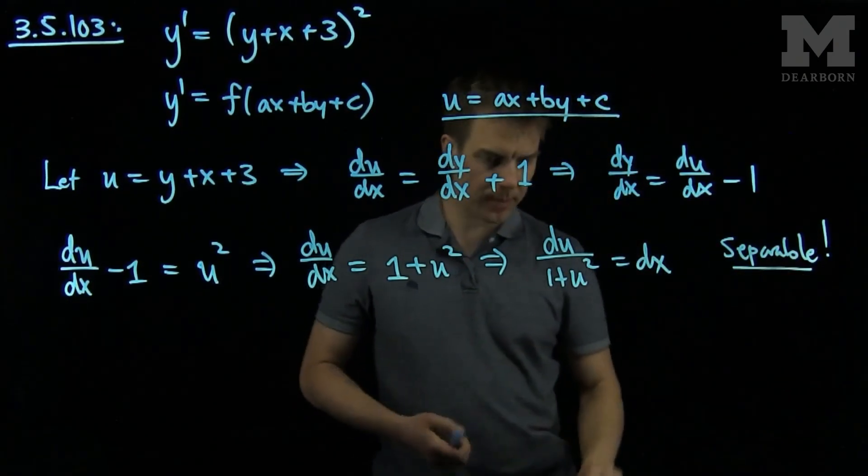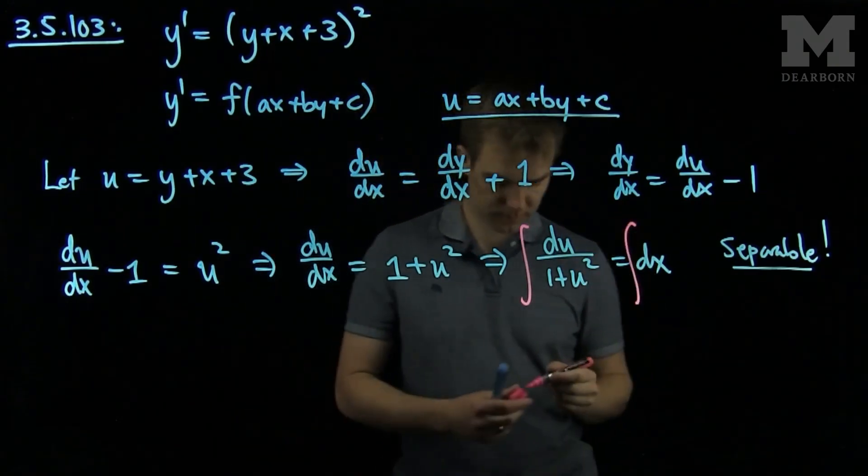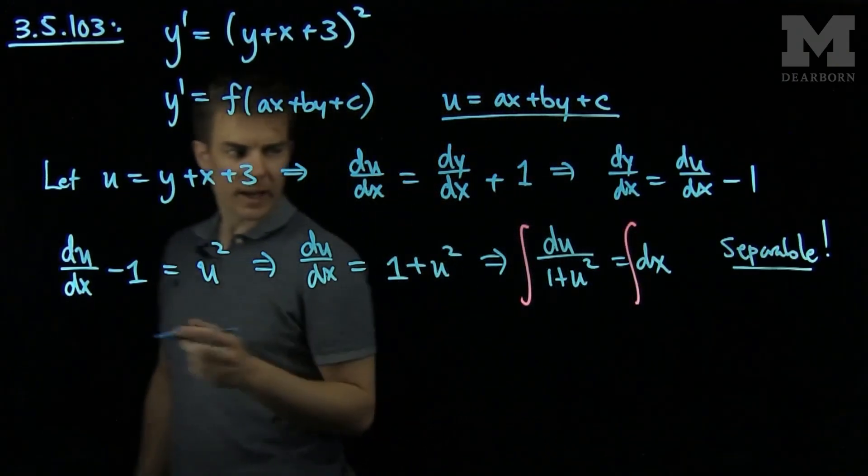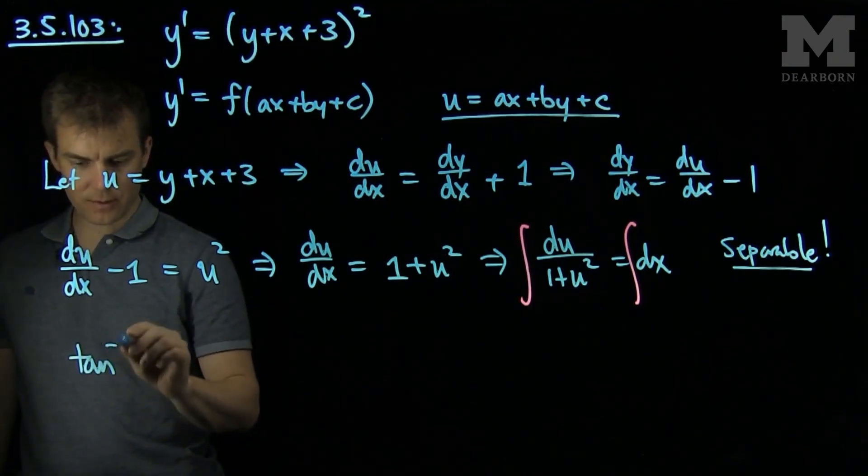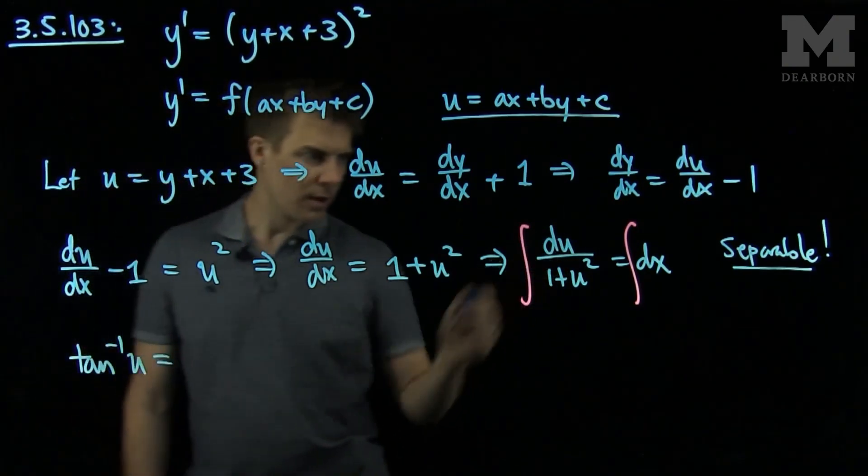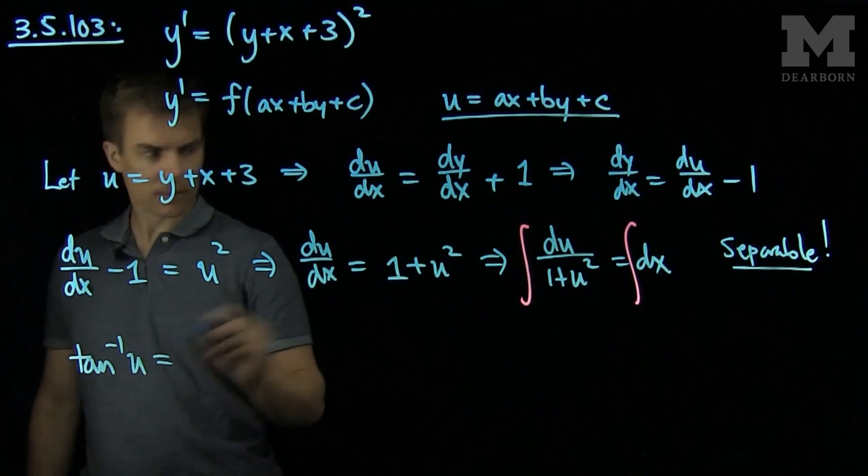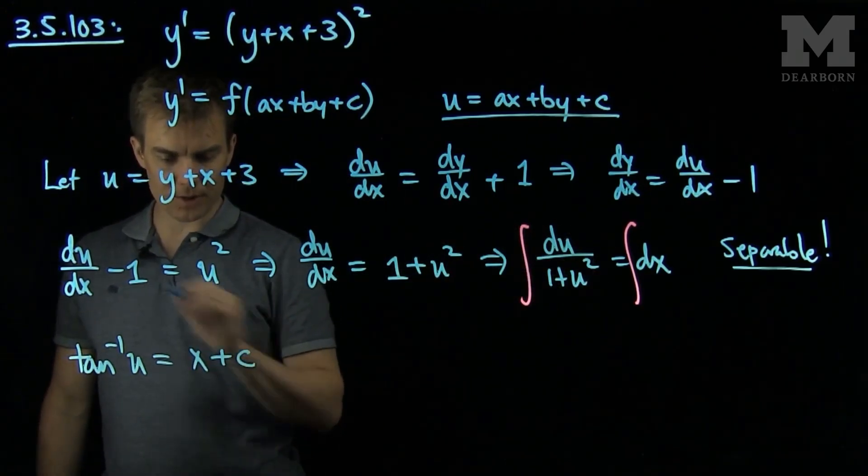And I can solve this by a standard technique. So I'll integrate both sides of the equation. The anti-derivative of du over 1 plus u squared is the inverse tangent of u, and the anti-derivative of dx is just going to be x plus c.